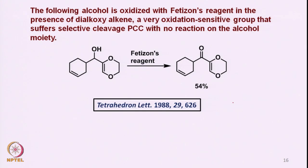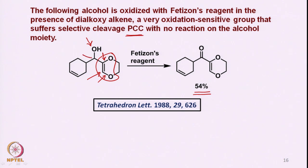The following alcohol is oxidized with Fetizon's reagent in the presence of a dialkoxy alkene — an alkene bearing two alkoxy groups. This is a very reactive substrate. When reacted with PCC there was C-C bond cleavage and no oxidation of the alcohol. On the other hand, Fetizon's reagent allows the oxidation to take place; even though the yield is low, it still performs the oxidation of such a sensitive allylic alcohol substrate.